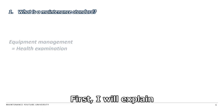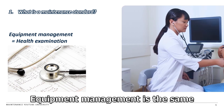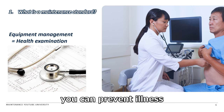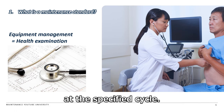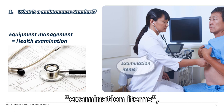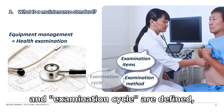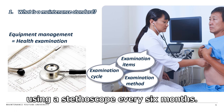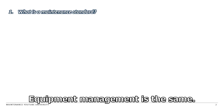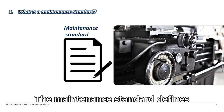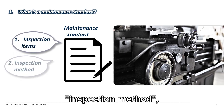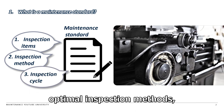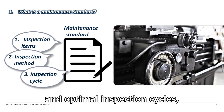First, I will explain what the maintenance standard is. Equipment management is the same as a medical examination. In the medical examination, you can prevent illness by examining the specified items at the specified cycle. For example, examination items, examination method, and examination cycle are defined such that the doctor listens to the sound of lungs using a stethoscope every six months. Equipment management is the same. The maintenance standard defines inspection items, inspection method, and inspection cycle. If you can inspect equipment with comprehensive inspection items, optimal inspection method, and optimal inspection cycles, you can prevent failures.